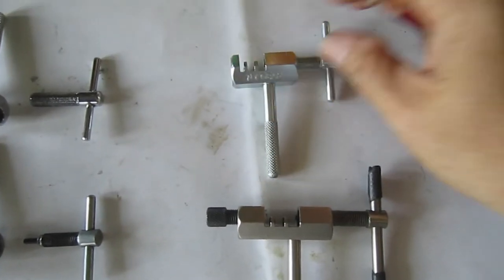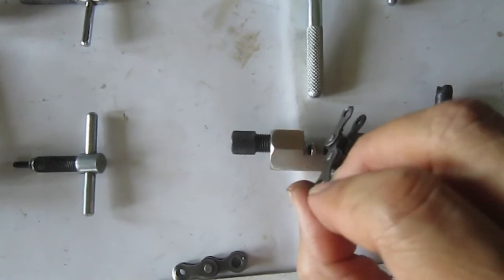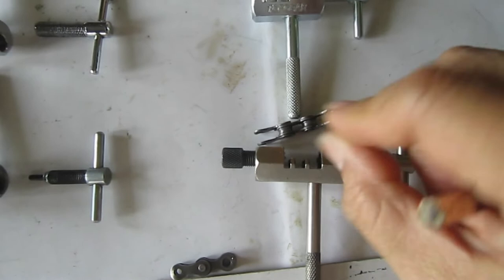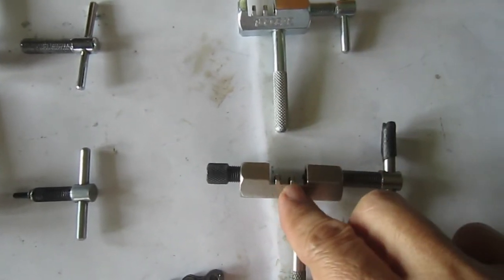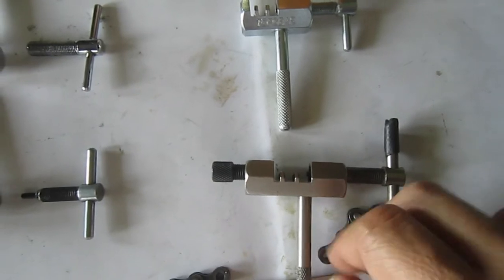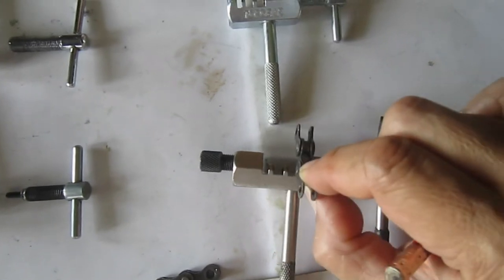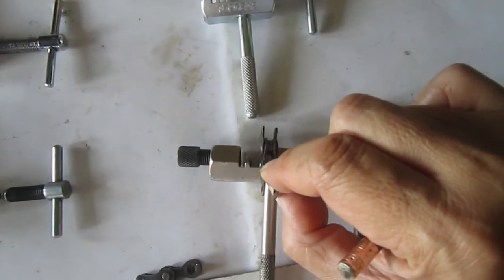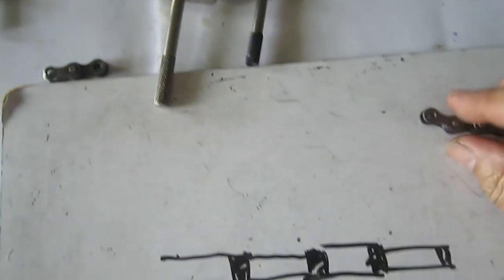If your chain link is tight, this portion is for loosening the chain link. So if it's tight, does not want to pivot, you use this portion. Now, if you're pushing the pin out, you use this portion. Don't use this portion in pushing the pin out. You always place your chain here.